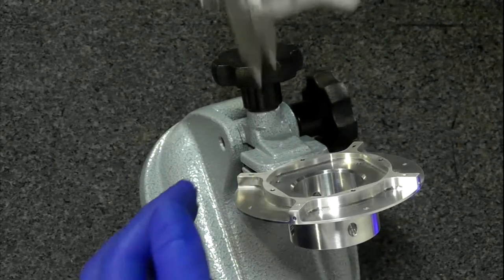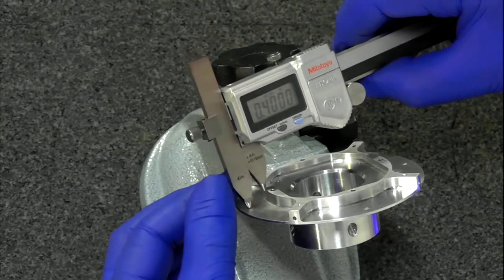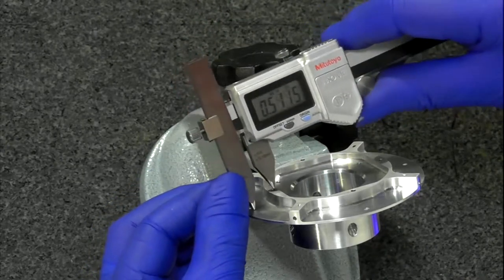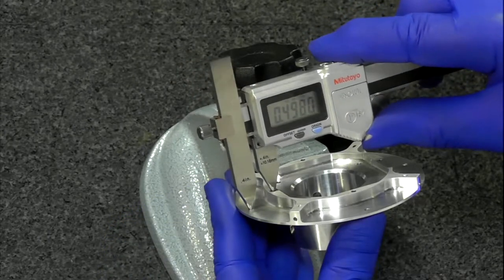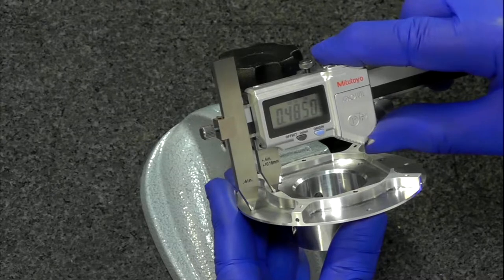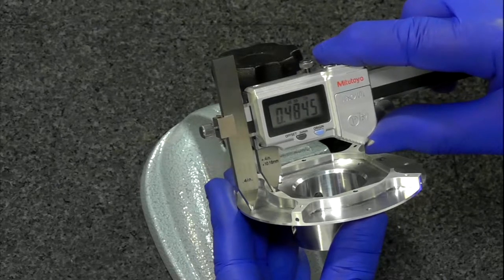Here with the offset, we've dropped the jaw down. You just merely put it in the hole, the other one in the hole, push down because they're self-centering, and you have a measurement of 4.8445.